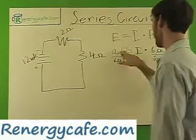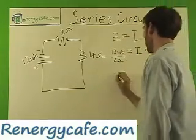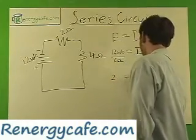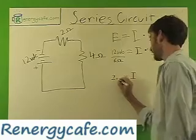12 divided by 6 is 2, so 2 equals I. And this is amps.